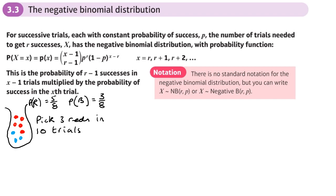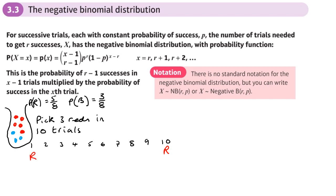We want to find the probability of picking three reds in ten trials. Here are ten trials: one two three four five six seven eight nine ten. I want three reds in those ten trials. What I definitely know is that the last red has to be on the tenth trial. The other two could be anywhere — here and here, with the others being yellow.